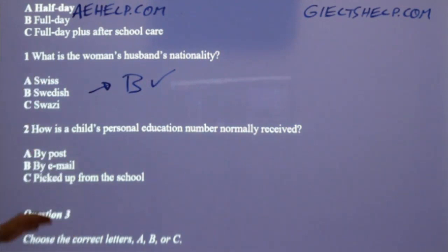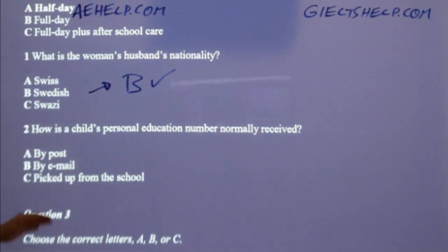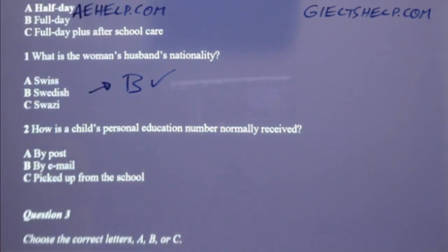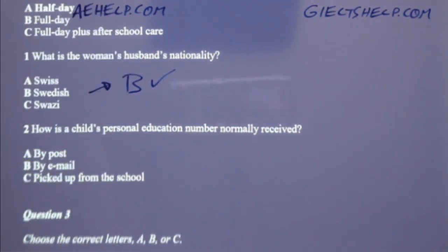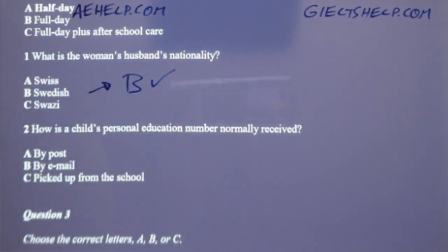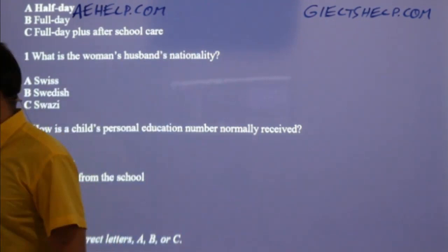Use the capital letter B when you're doing this. Number two: how is a child's personal education number normally received? Is it by post, by email, or picked up from the school? Many students agree the answer is A. She said it would have been sent by post in a yellow envelope, so A is the correct answer. Swedish — B, and by post — A.